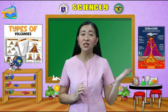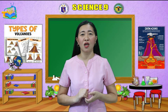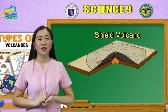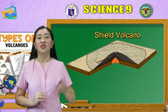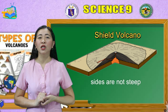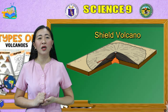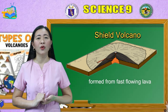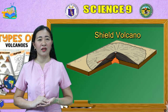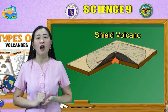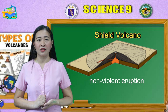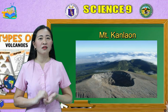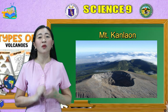Let us have the classification of volcanoes according to the shape of the cone. First, let us have shield volcanoes. Shield volcanoes get their name from their shape — they are literally shaped like a shield. The sides of a shield volcano are not steep, but the volcano may cover a very large area. These volcanoes are formed from fast-flowing lava that flows easily over the surface. Since the lava is fluid, eruptions from these types of volcanoes are relatively non-violent. The slope of a shield volcano is less than 10 degrees. Mount Kanlaon, located on the island of Negros, is an example of a shield volcano.